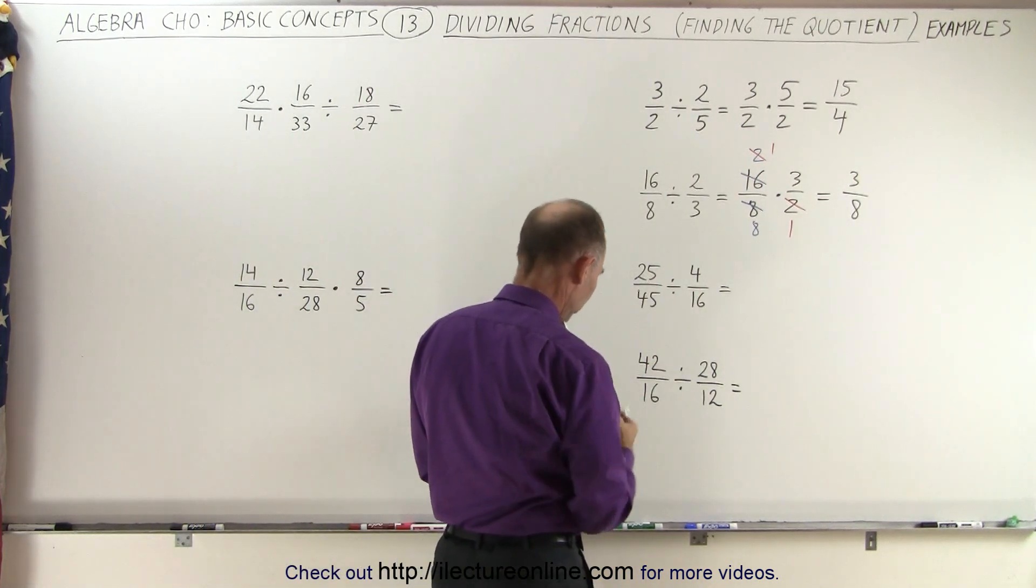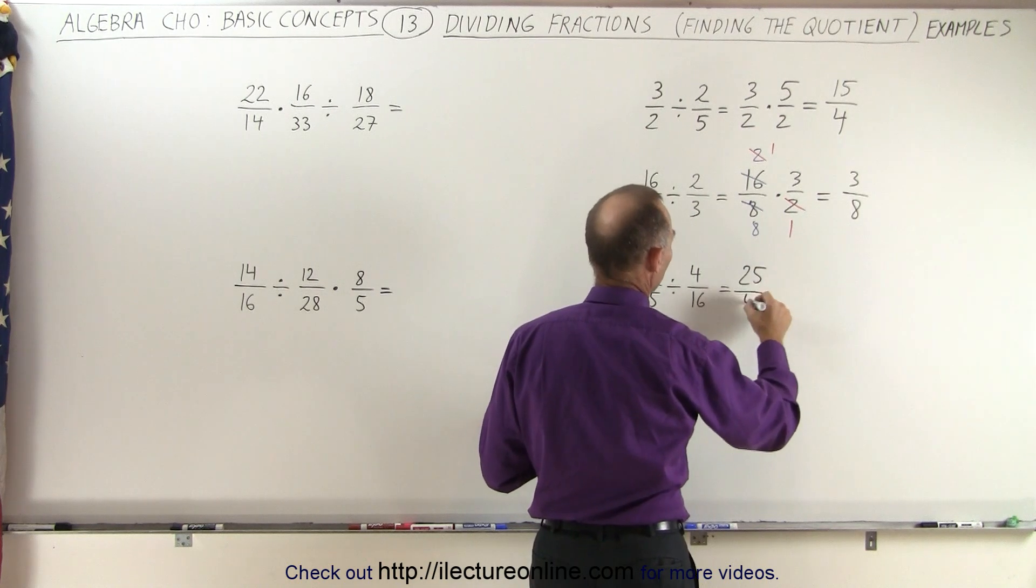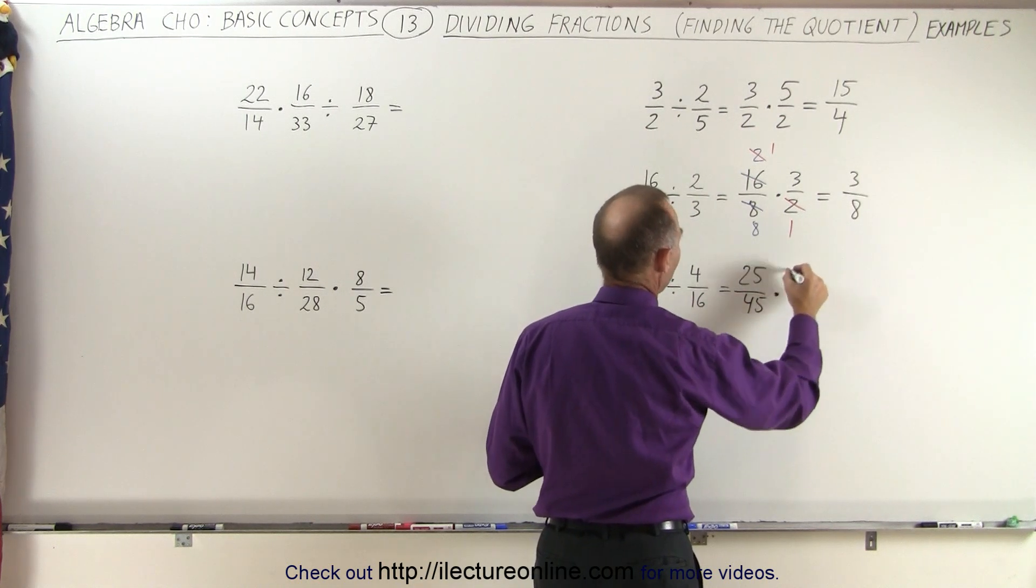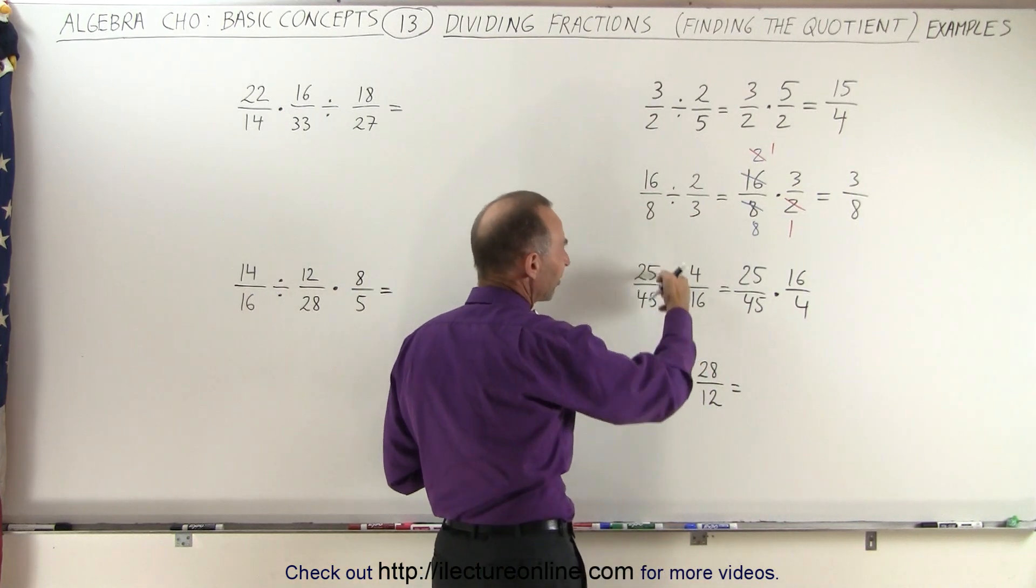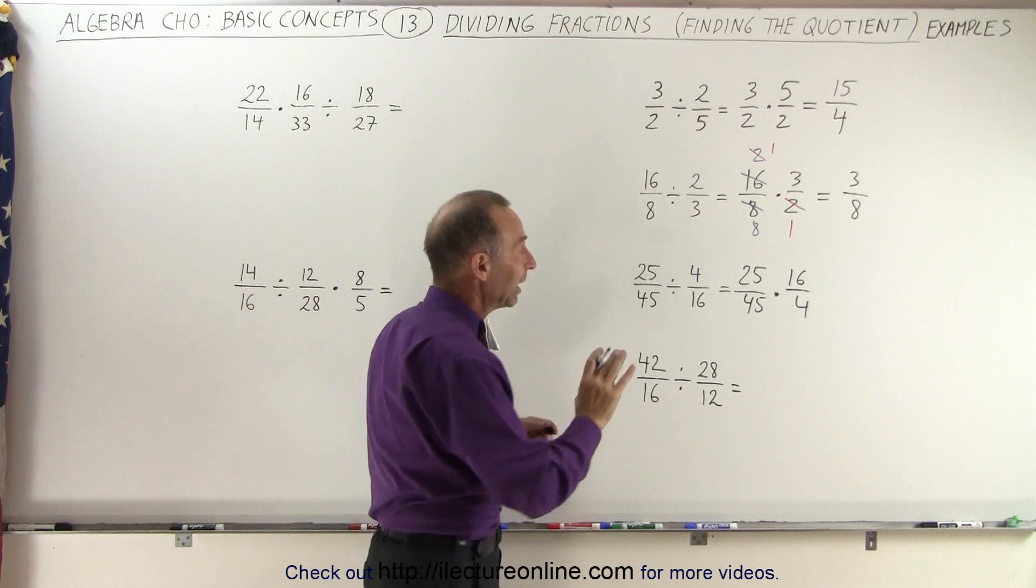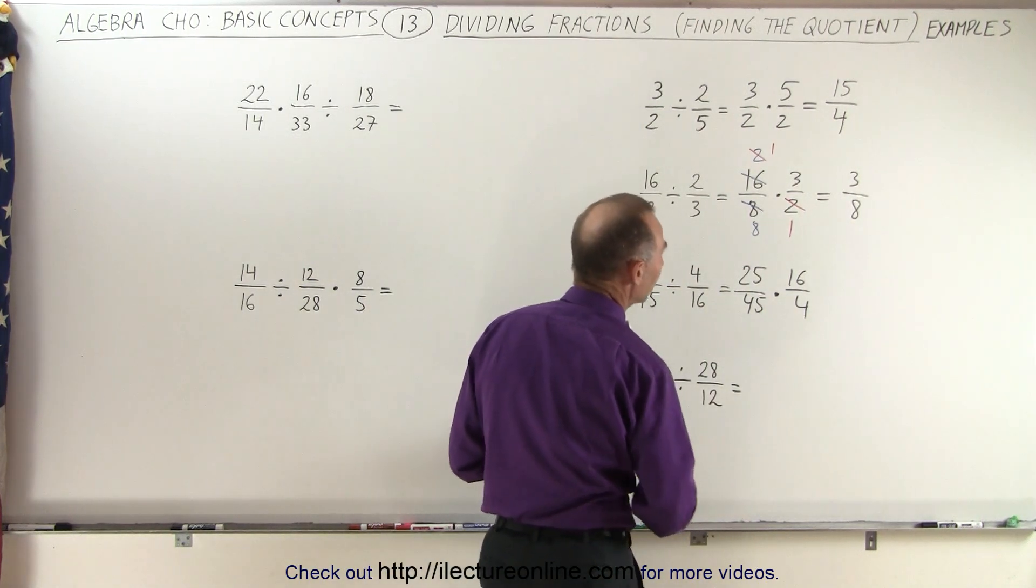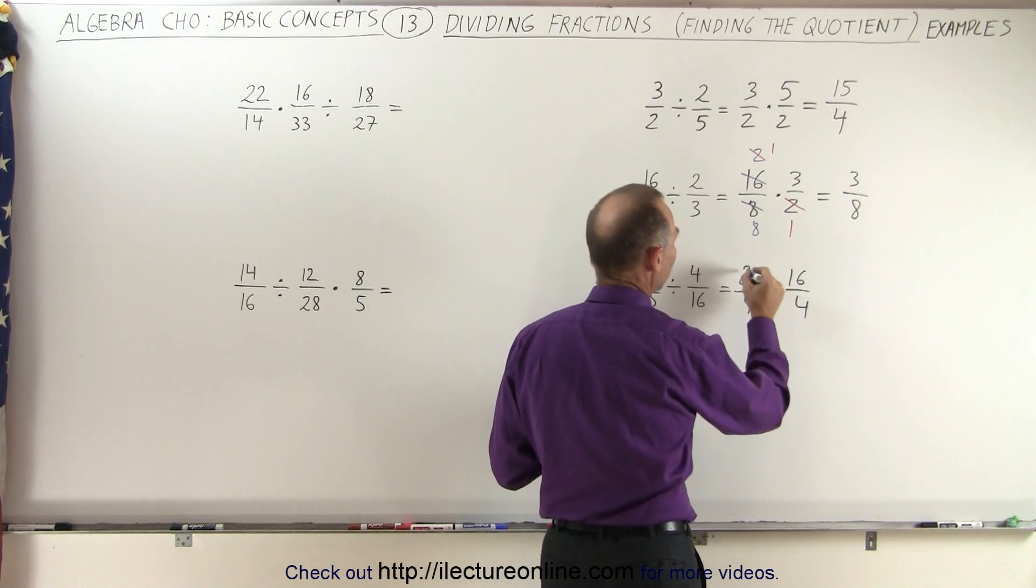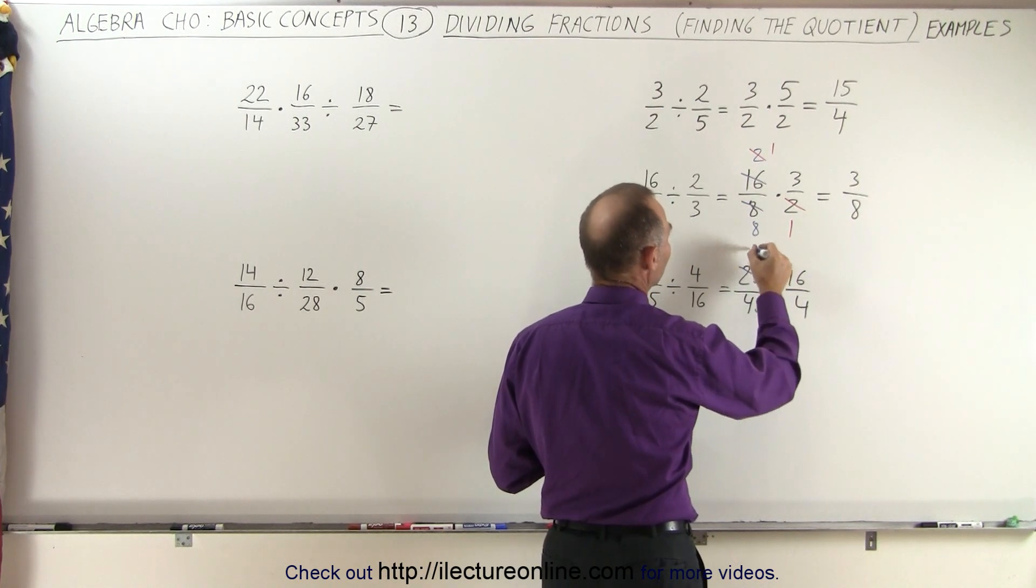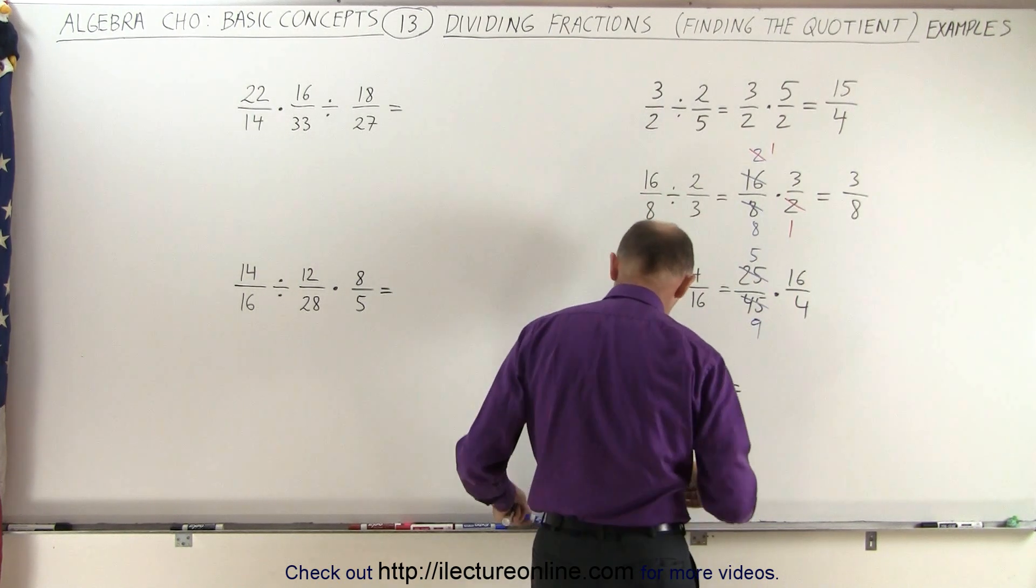So here again, let's first turn that into a multiplication. So we have 25 over 45 multiplied times 16 over 4. Even though you could have already simplified this, it's just better to wait until you have it into the form of a multiplication, and now we go ahead and simplify. Notice the 25 and the 45 are both divisible by 5. 25 divided by 5 is equal to 5, and 45 divided by 5 is equal to 9.